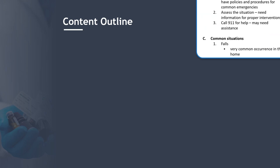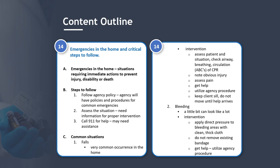Section 14: Emergencies in the home and critical steps to follow. Emergencies are situations requiring immediate action to prevent injury, disability, or death. Steps: follow agency policies and procedures for common emergencies; assess the situation for proper intervention; call 911 for help. Falls are a very common occurrence in the home. Intervention: assess the patient and situation, check their airway, breathing, and circulation — the ABCs of CPR — note any obvious injuries, assess pain, get help, utilize agency procedure. Keep the client still and do not move them until help arrives.